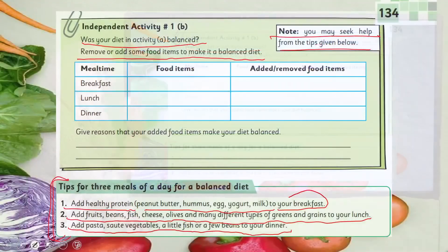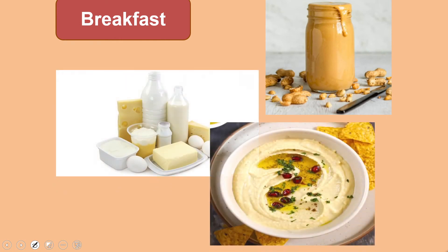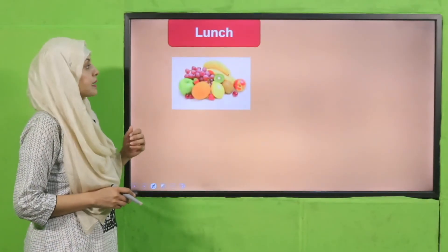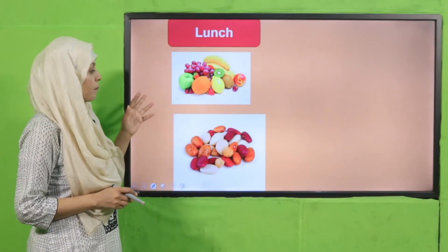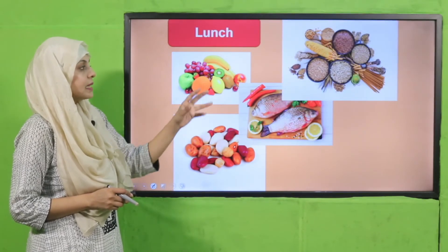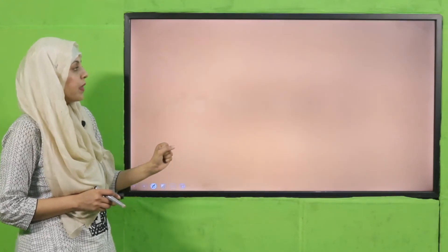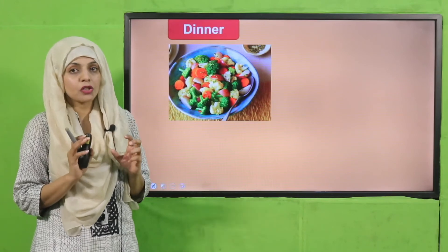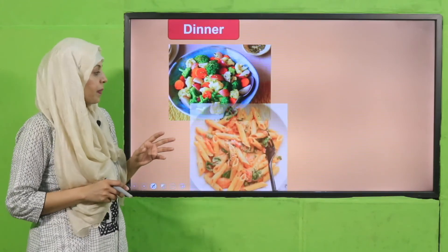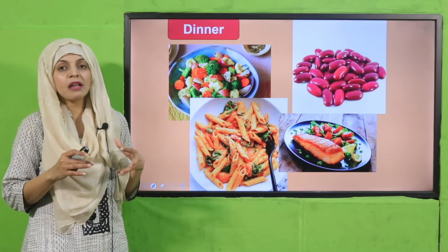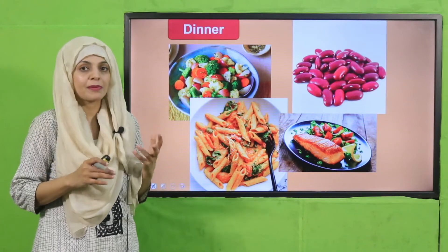My dear students: for breakfast you should take peanut butter, dairy, eggs or yogurt. For lunch you should take vegetables, proteins, fruits, meat or carbohydrates. For dinner, since dinner should be light, take sautéed vegetables with some pasta, beans and some fish. You can also select other light options of your choice.